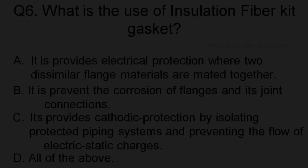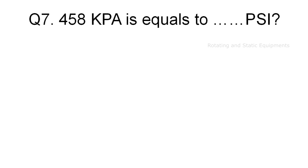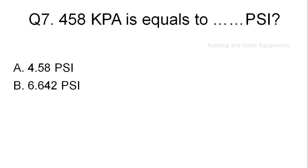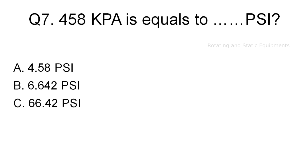Question 7: 458 kilopascal is equal to how much psi? Option A: 4.58 psi. Option B: 6.642 psi. Option C: 66.42 psi. Option D: 45.8 psi.